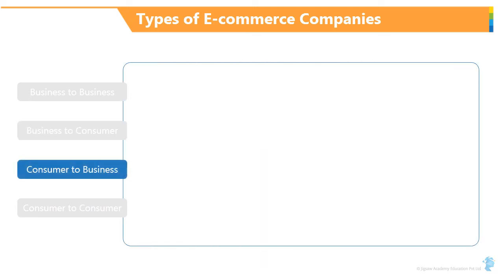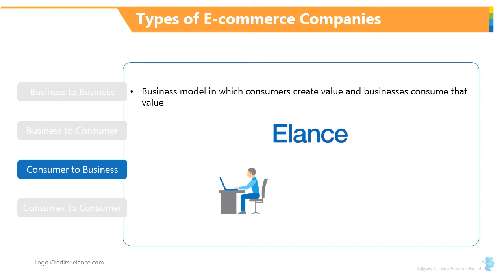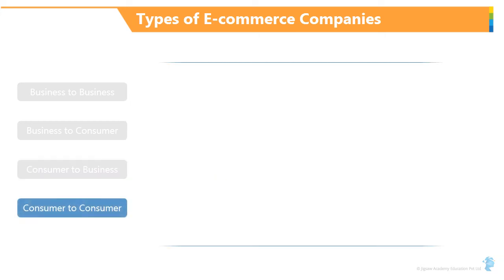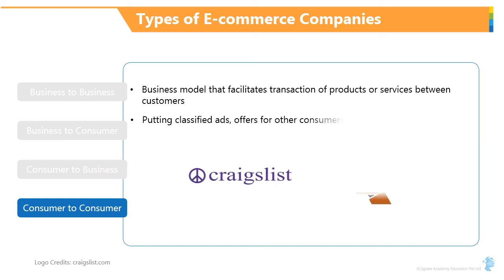The third form being C2B, consumers to business. What this really means is that in today's time, you can actually sell your services to a business. Elance is an example where freelancers create their login accounts and companies reach out to them for a particular piece of work. The fourth one being C2C, consumer to consumer — Craigslist being one example. Think about classified ads: as a consumer, you are putting up something on sale which another consumer is interested in.